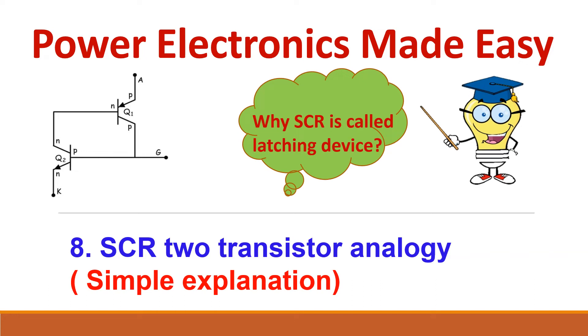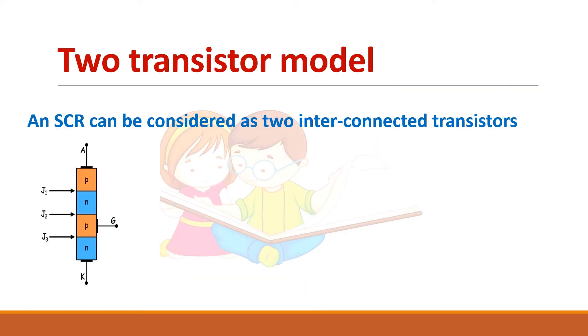Let us see about the two transistor model of SCR. So this is the structure of a SCR. It has four layers and three junctions.